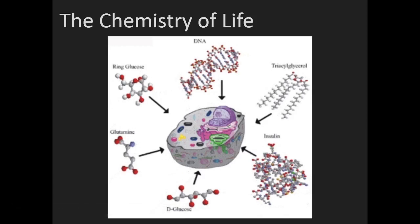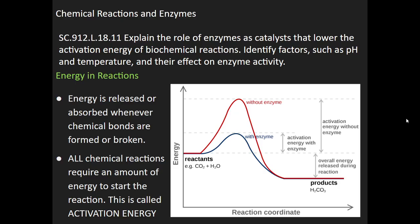Hi everyone, this is video four of the chemistry of life series. This one is going to be on chemical reactions and enzymes. The goal here is to explain the role of enzymes as catalysts that lower the activation energy of biochemical reactions, and also to identify factors such as pH and temperature and how those factors affect enzyme activity.